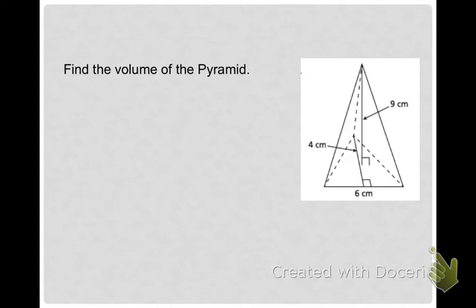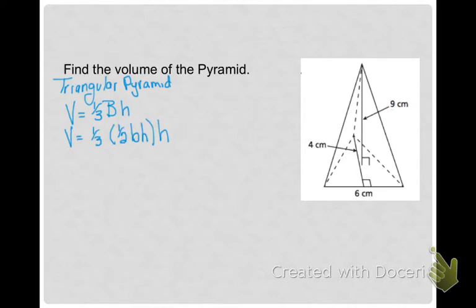So let's find the volume of this triangular pyramid. We're going to put down our formula, which is one-third the area of the base times the height. Since this is a triangular base, let's change that to one-half base times height.